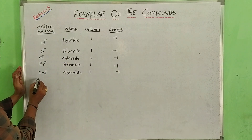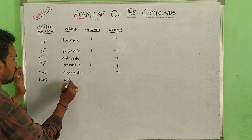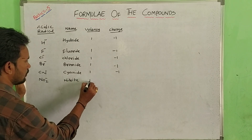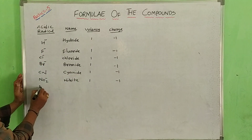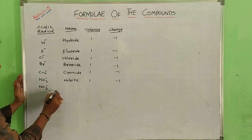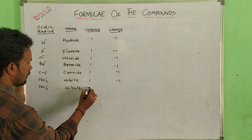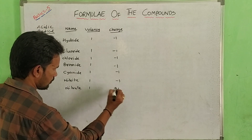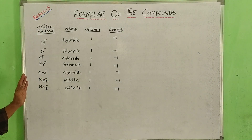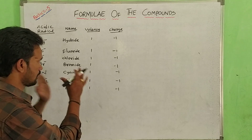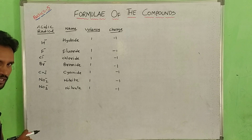Next is NO₂ minus — nitrite. Charge minus 1, valency 1. Next is nitrate, NO₃ minus. Charge minus 1, valency 1. So these are all minus 1 elements. You can see the pattern — all have valency 1 and charge minus 1.